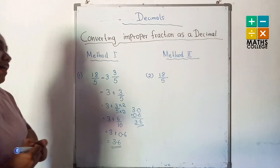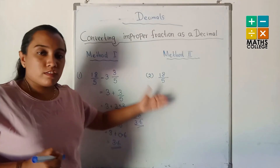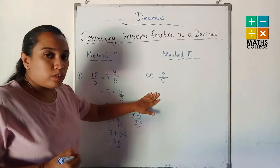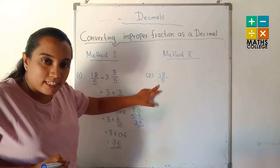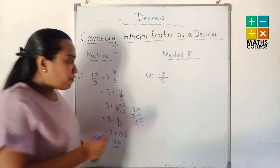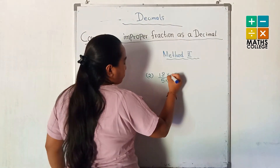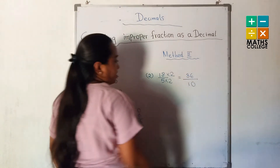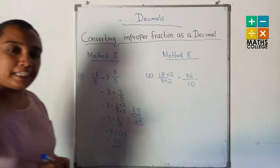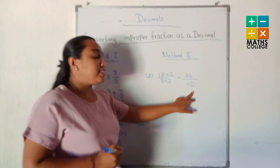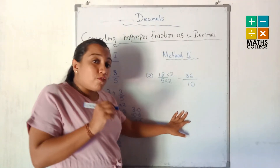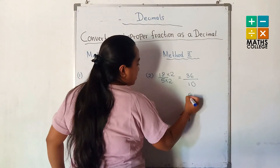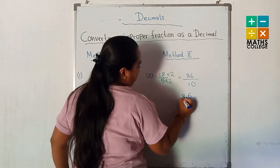The second method: write the improper fraction directly as a decimal without converting to a mixed number. For 18 over 5, the denominator is 5. Multiply by 2 over 2 to convert the denominator to 10, giving 36 over 10. Since 10 has one zero, the decimal has one decimal place — 6 goes to the first decimal place, giving 3.6.